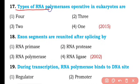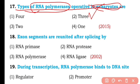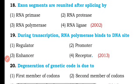Question number seventeen. The types of RNA polymerase operative in eukaryotes are: 4, 3, 2, or 1? So the correct answer is option two — three types of RNA polymerases are present in eukaryotes: RNA polymerase 1, RNA polymerase 2, and RNA polymerase 3.